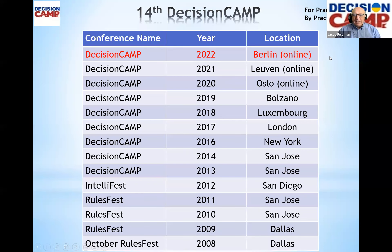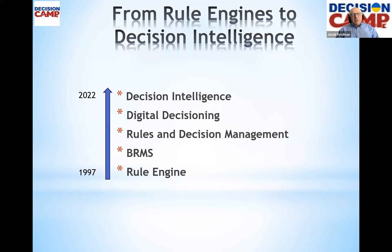This is our 14th Decision Camp, originated by practitioners and for practitioners. For the third time we're doing it online — hopefully next year we will return to the in-person format. In the last 25 years our movement and supporting products have changed dramatically. Even the name of our movement keeps changing: from rule engines to BRMS, to rules and decision management, and recently from decisioning to decision intelligence.